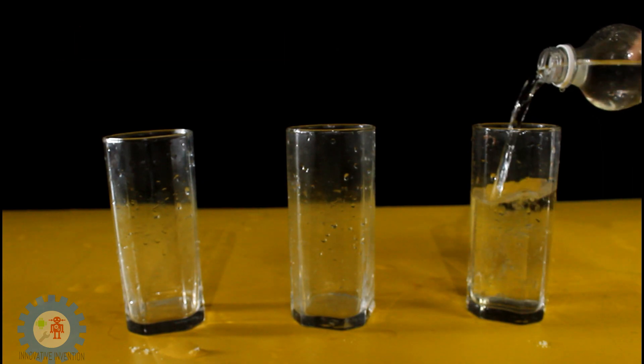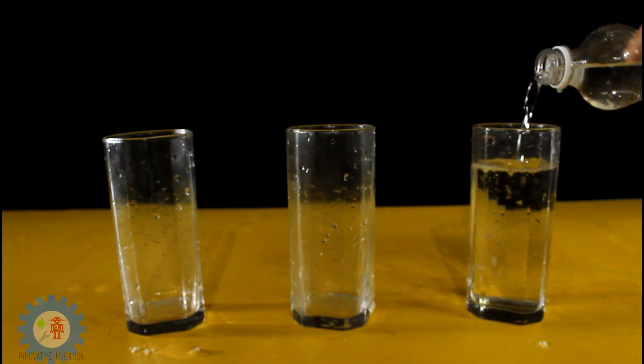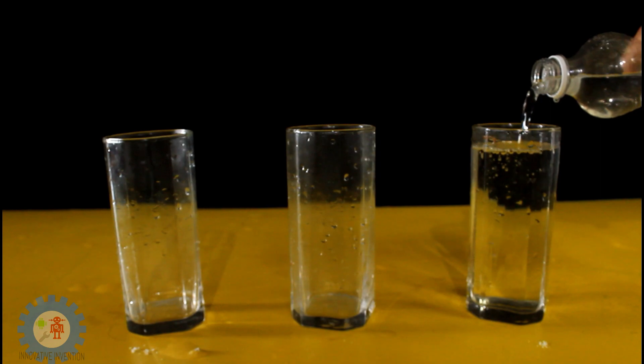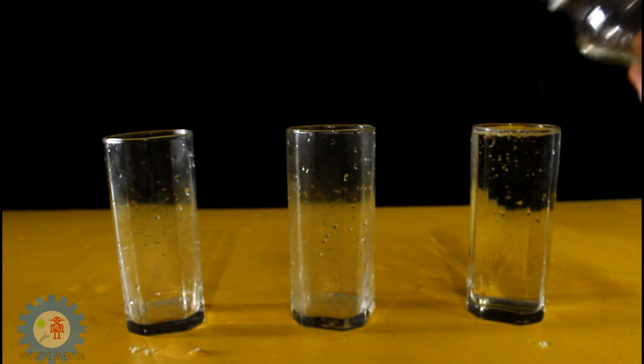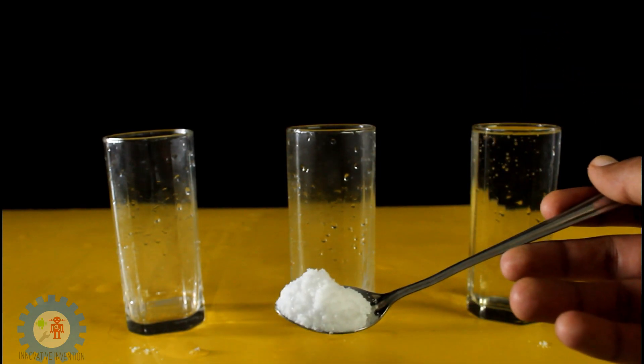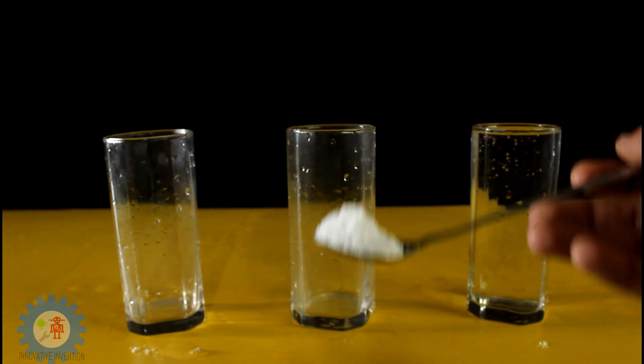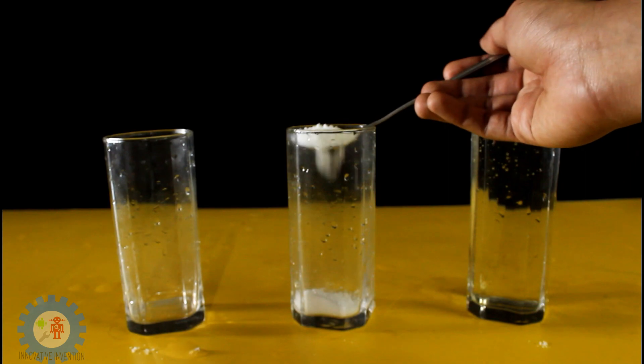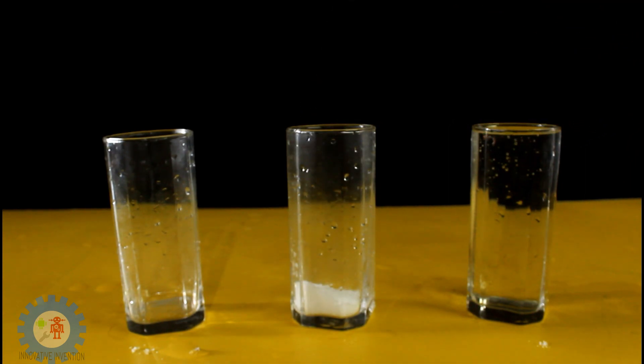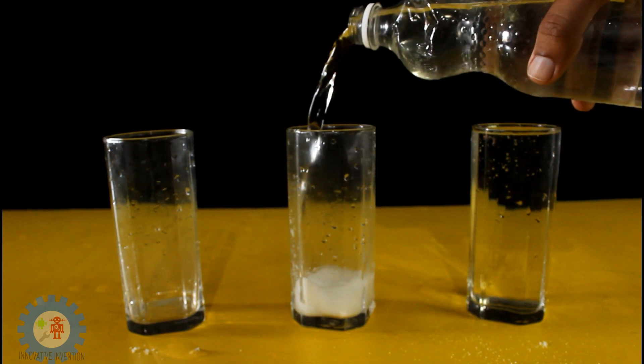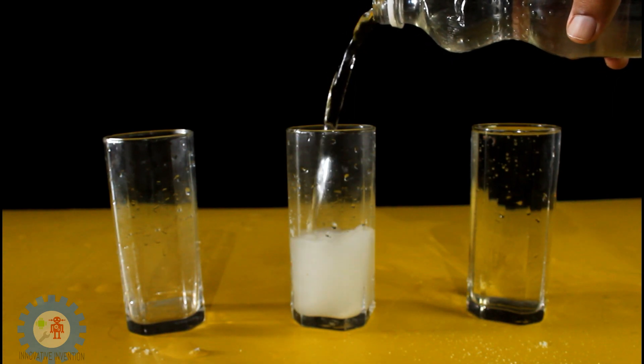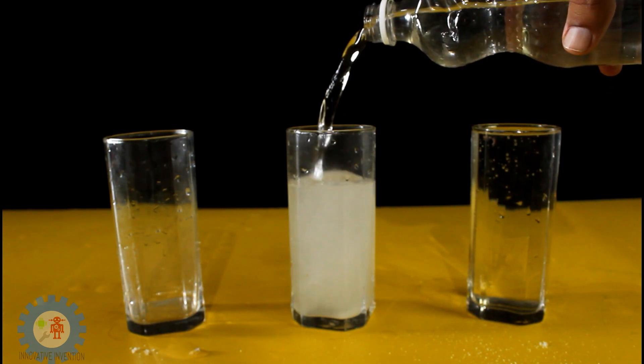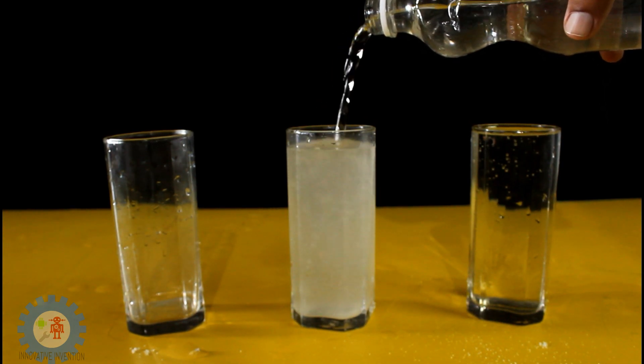In the second beaker we will be adding some water and then adding some salt to make a salt water solution so that we can see the density changes and also the color difference between pure water and salt water.